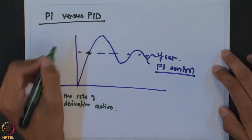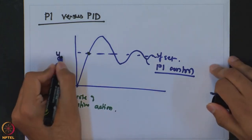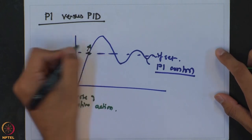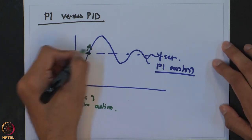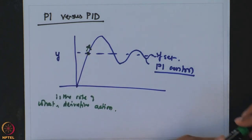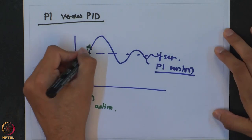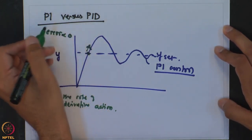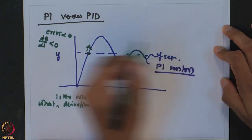Let us consider a particular point at which the instantaneous value of the output Y has reached the set point, but the system has not stabilized yet — it is still going to oscillate. The moment you move away from this point, the error is going to increase and become negative, because we are above the set point.